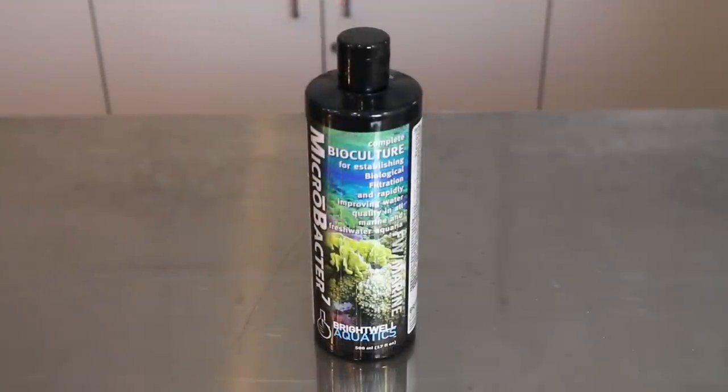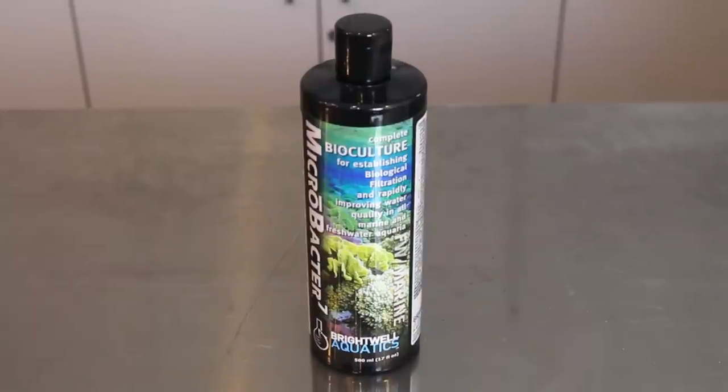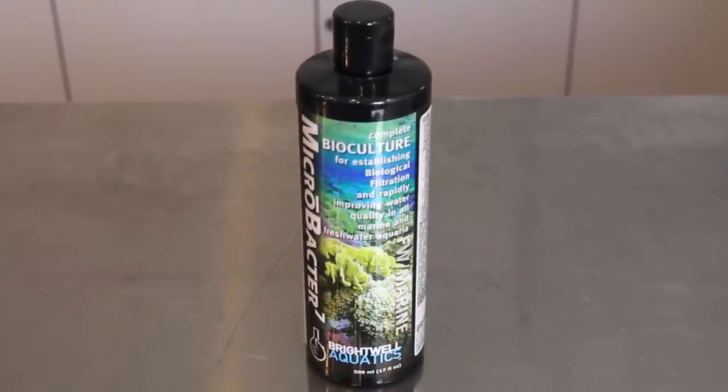Adding a bacteria additive such as Brightwell Aquatics Microbacter 7 is also a great idea to help get the tank cycled quickly and help maintain a healthy population of bacteria in the system.